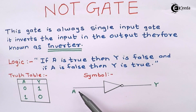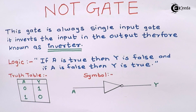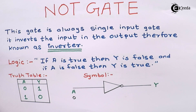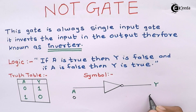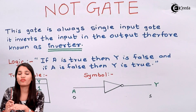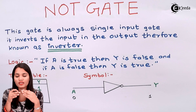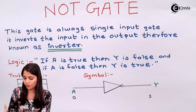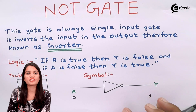Consider A as the input and Y as the output. If A is zero — that is, the input is zero — zero means the false value. Since the NOT gate performs as an inverter, we will get the opposite output. The opposite of zero is one, so at the output we get the value one. In other terms, if the input is false, then the output will be true. The opposite of the input is always the output.